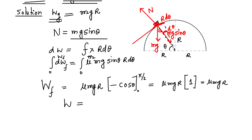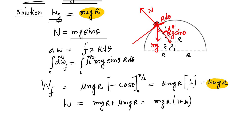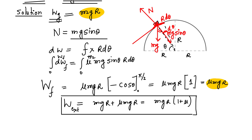The total work done by the external agent is the sum of work done against gravity and work done against friction: mgR + mu*mgR. Taking mgR common, this equals mgR(1 + mu). So this is the work done by the man to move the block from the ground to the topmost point of the hemisphere.